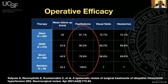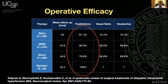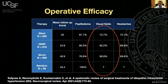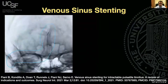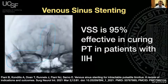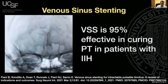In terms of other symptoms, venous sinus stenting seems to be the most effective treatment for improving patients' visual fields as well as their headaches. Venous sinus stenting is 95% effective in curing pulsatile tinnitus in patients with IIH, per this recently published meta-analysis.